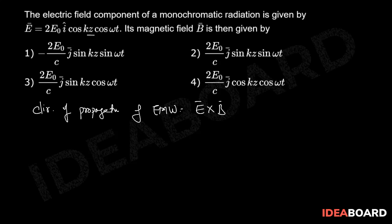It suggests that direction of propagation is along z axis. If I am taking this along k cap, then it should be i cap cross j cap. So electric field is varying along x axis and magnetic field should be varying along y axis.